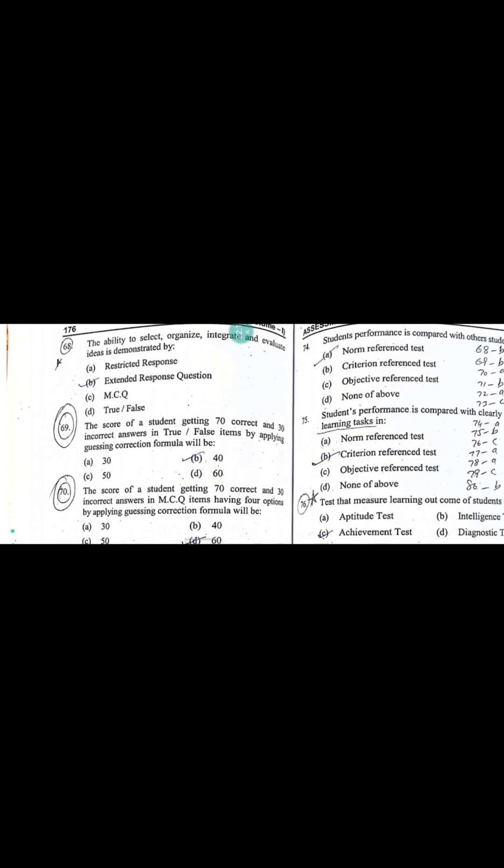Ability to select, organize, integrate, and evaluate ideas is demonstrated by extended response questions. The score of a student getting 70 correct and 30 incorrect answers in true-false items, using the guessing correction formula, will be 40. The right option is 40.